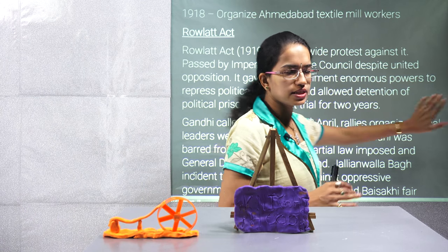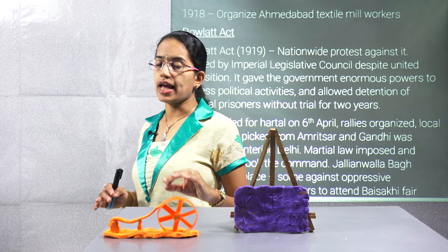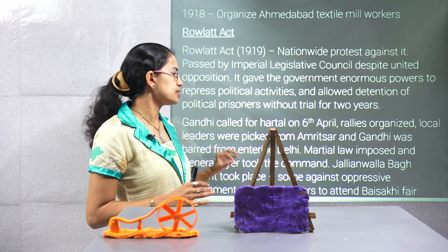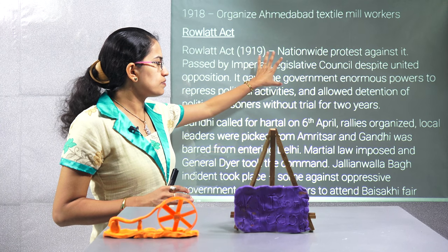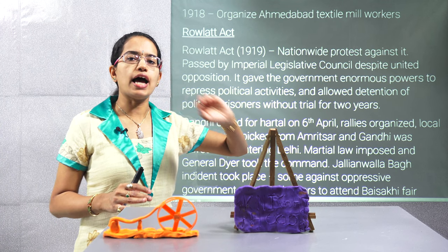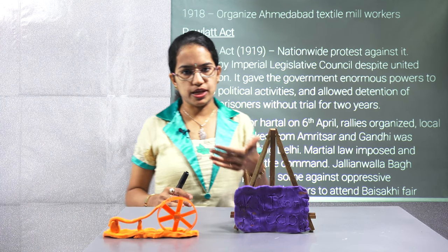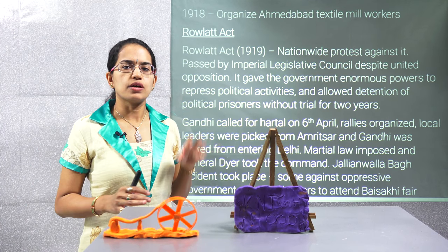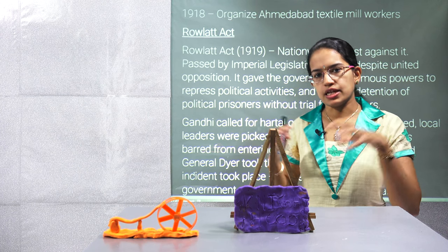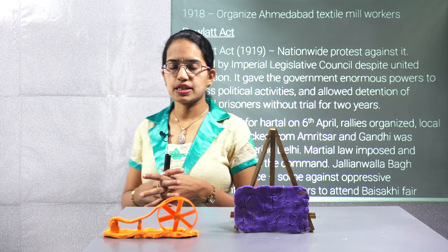This was protested by numerous leaders; there were numerous demonstrations and rallies. This was confined mainly to cities and urban areas. Many leaders from Amritsar were halted, Gandhiji was not allowed to enter Delhi, martial law was imposed, and General Dyer took command. When General Dyer came into command, the Jallianwala Bagh incident took place.